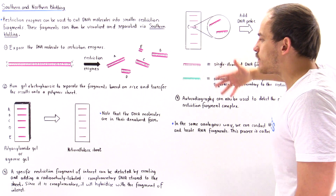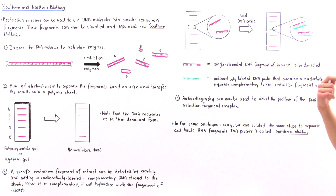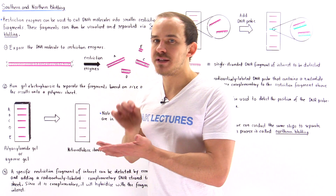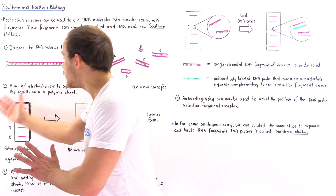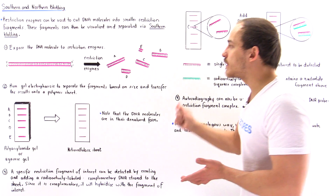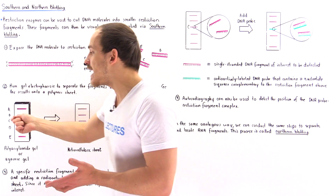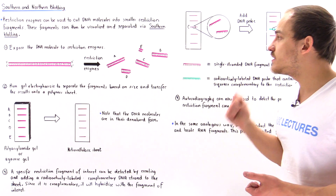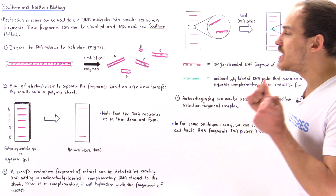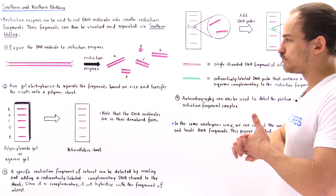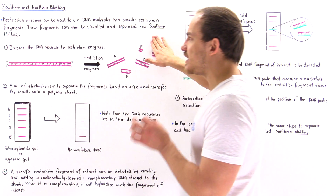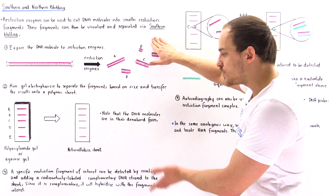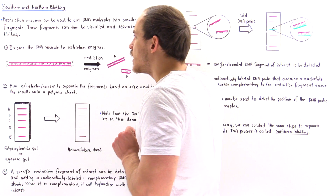Once we carry out step three, we use the process of autoradiography to pinpoint exactly where that fragment is. We can then confirm that band C contains the fragments we want to isolate, remove the other unwanted fragments, and obtain a pure solution containing only that gene we were interested in. This entire process — pinpointing, detecting, and isolating a DNA fragment of interest using a DNA probe — is known as southern blotting.